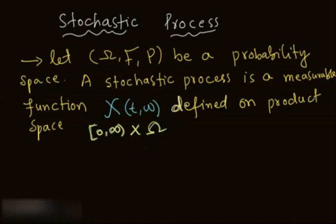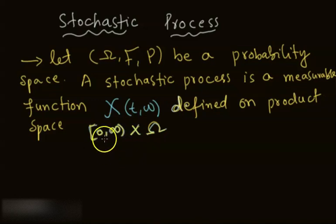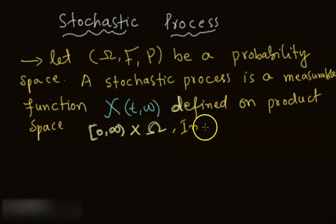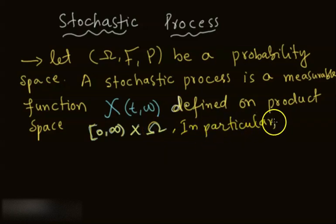So it's a measurable function defined on this product space, which is the product of two spaces. One is the interval [0, ∞) and the other is Ω, the probability space. In particular, the stochastic process is nothing but a measurable function depending on time and omega.